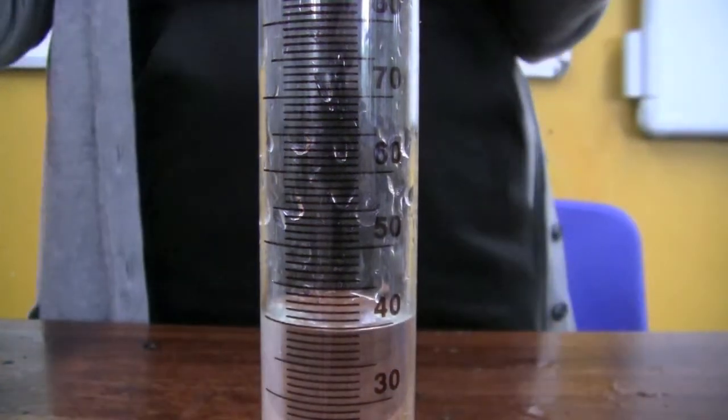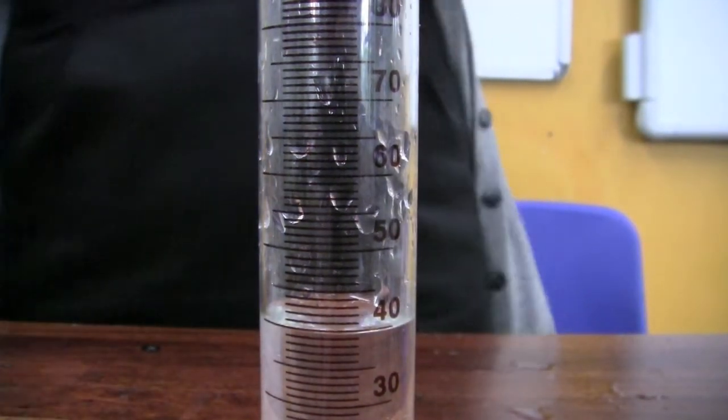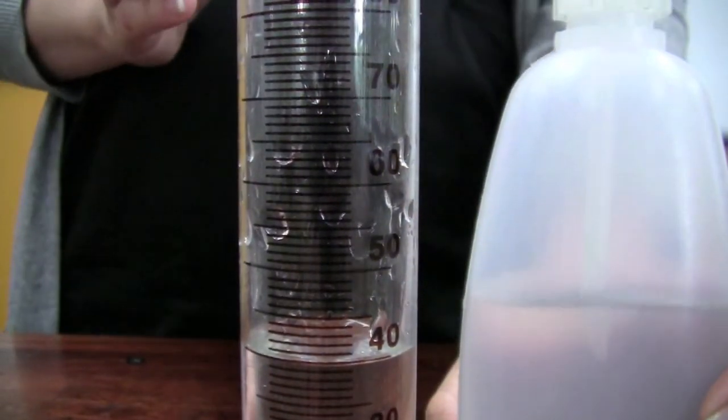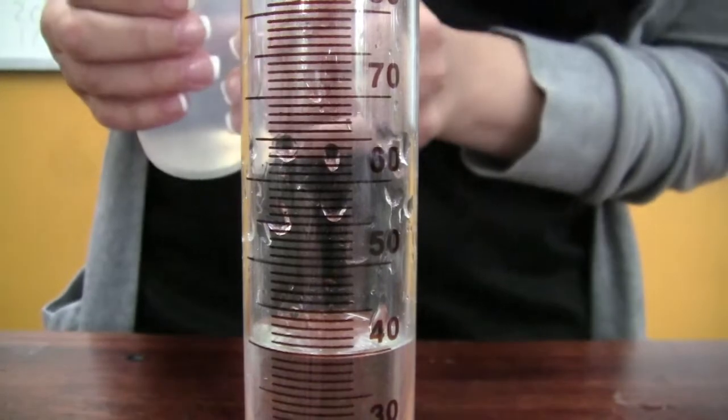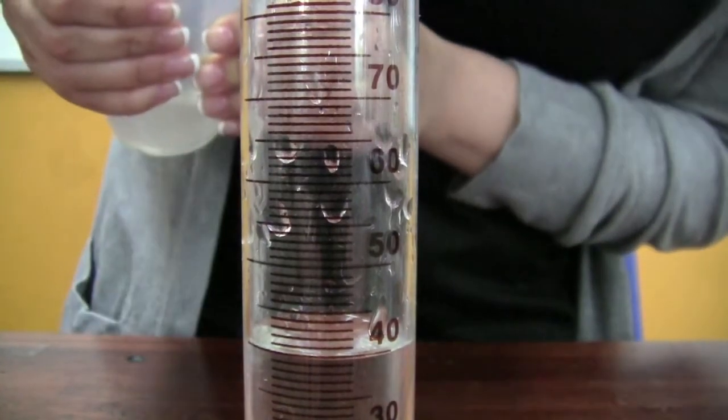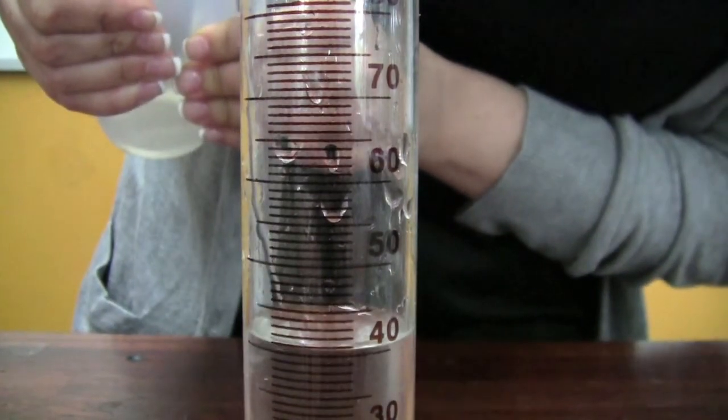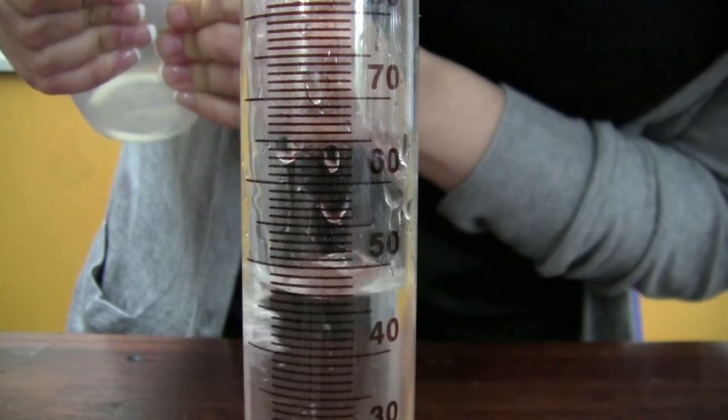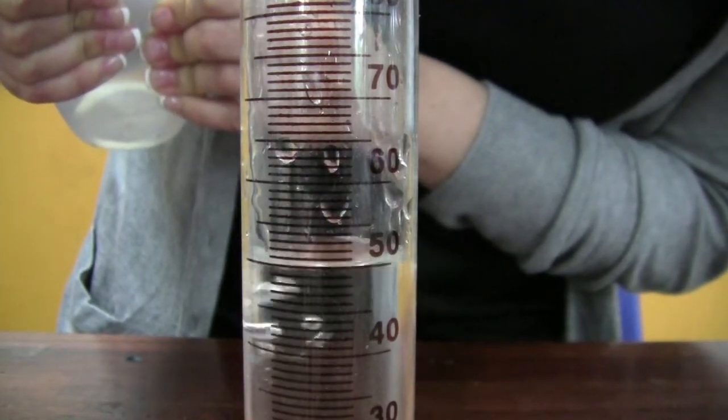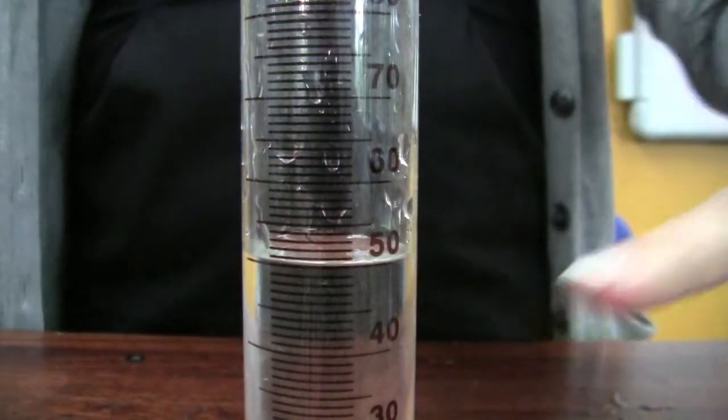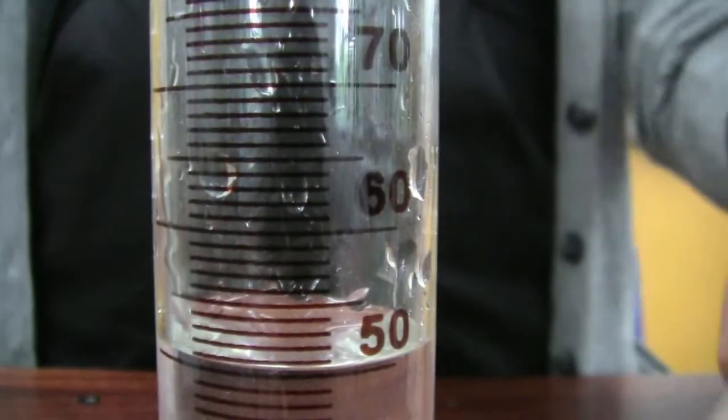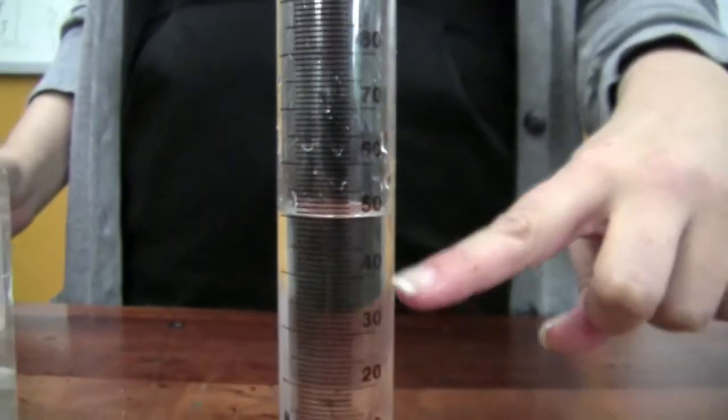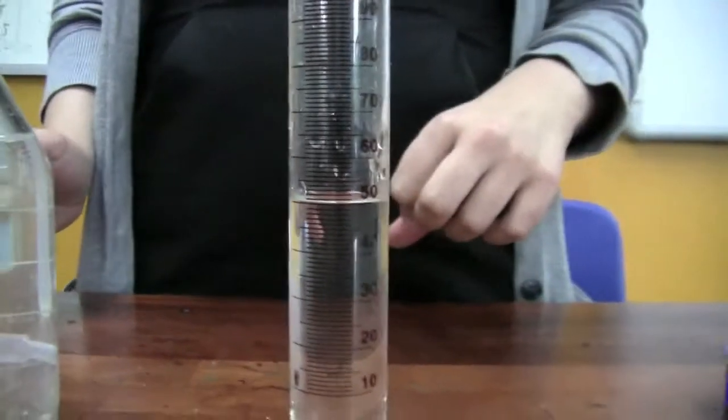Once the meniscus is at 40, we finish off with the water, the distilled water in the squeezy bottle, and fill it up to 50. Making sure that the meniscus is in the right place. So we've got 40 ml of sodium thiosulfate and 10 ml of water up to 50.